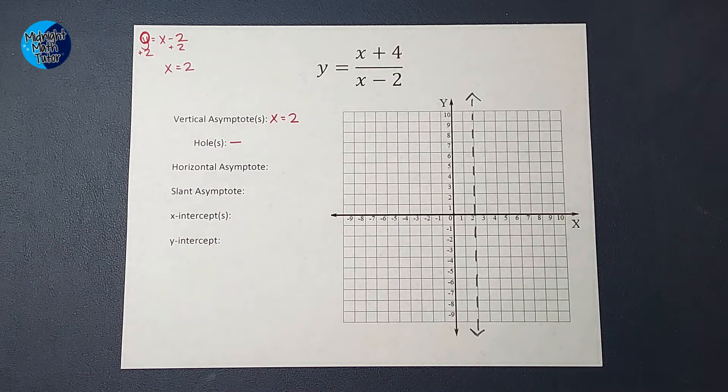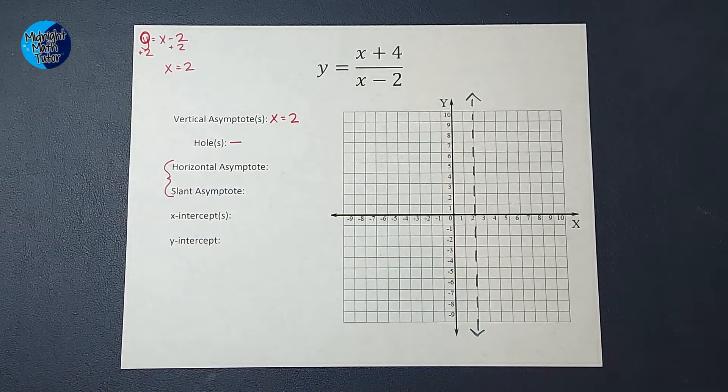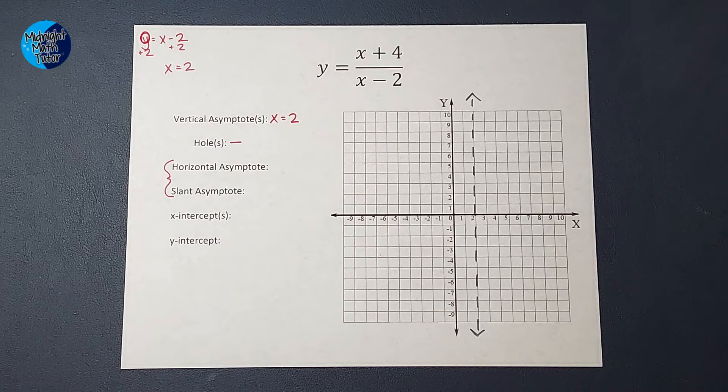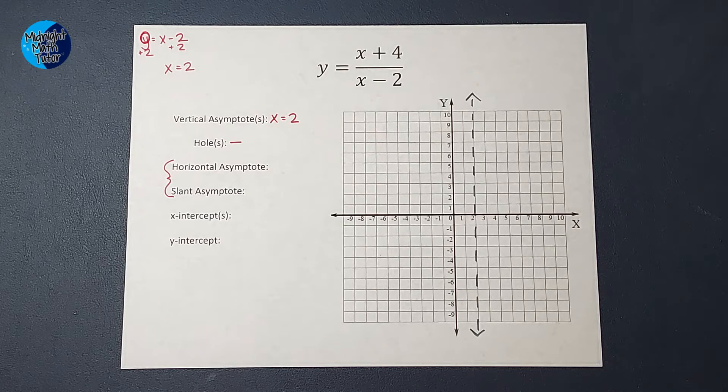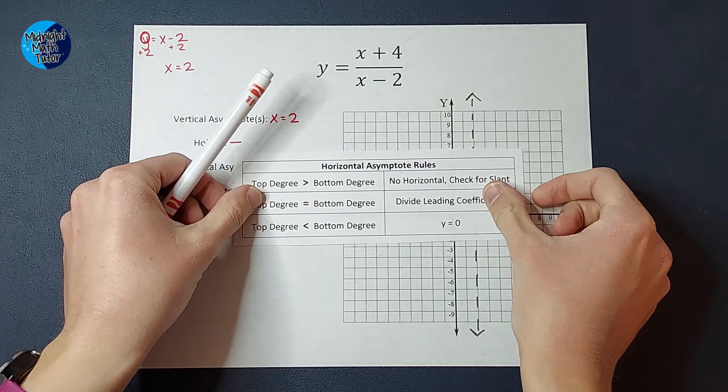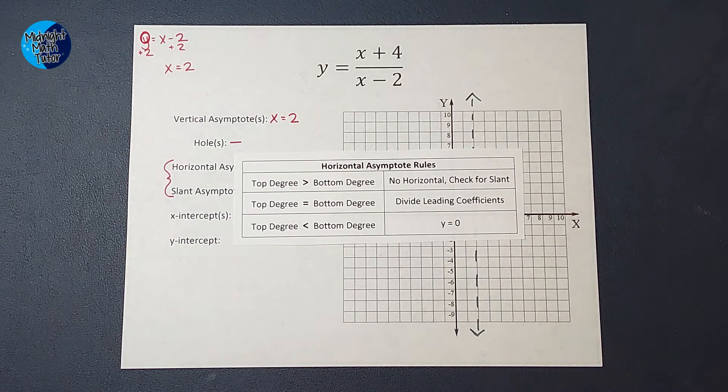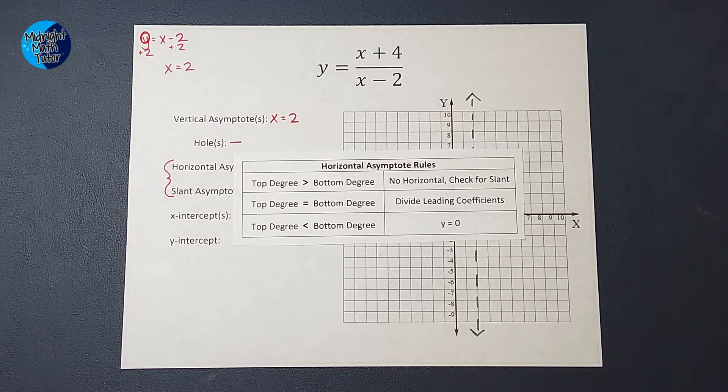The next thing we do is we check for horizontal and slant asymptotes. You will not have both. So for this one, we follow a set of rules that I will show you. If you're wondering why these rules are a thing and why they work, I'll link a video in the corner explaining that. For these, we look at our degrees.